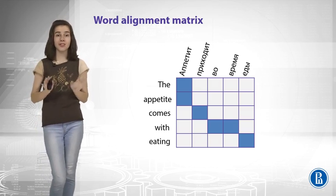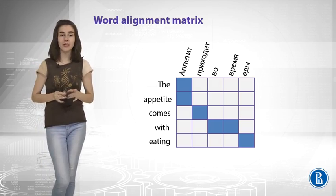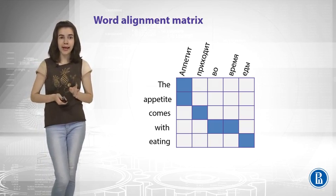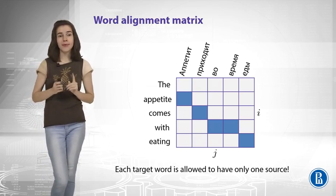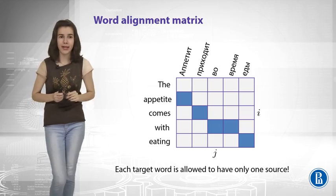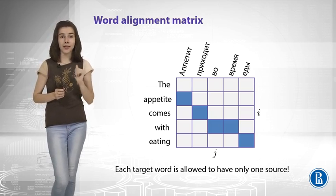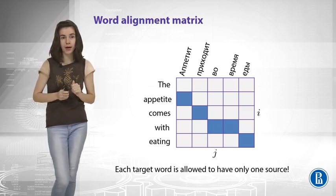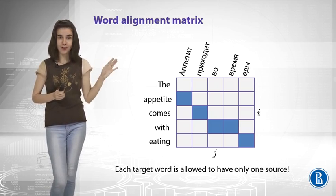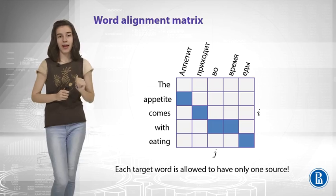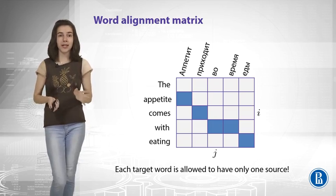So let us do some constraints, some simplifications to deal with this. And what we do is we say that every target word is allowed to be aligned only to one source word. Like here. So this is a valid example.